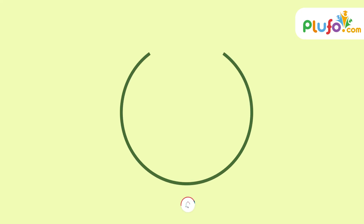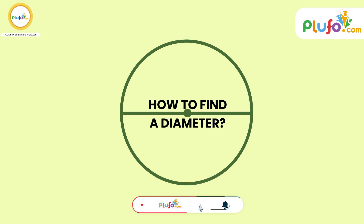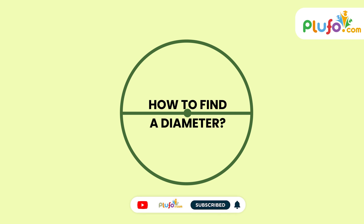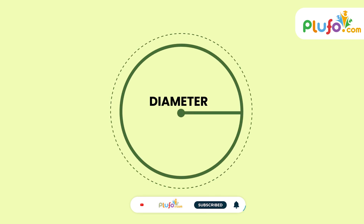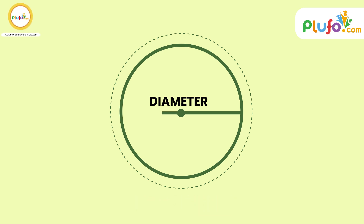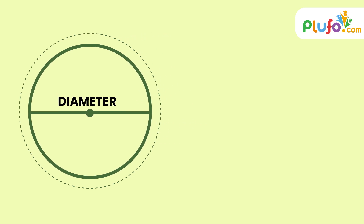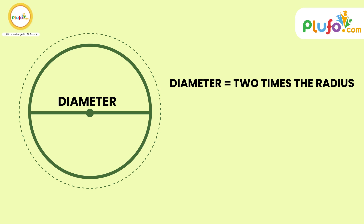So here is how to find a diameter. Diameter is a line which passes from one point of a circle, through the center, and meets the other end of the circle. Diameter is nothing but two times the radius.